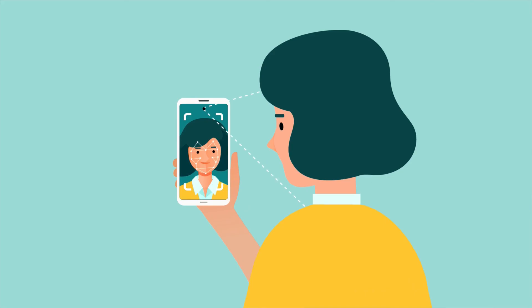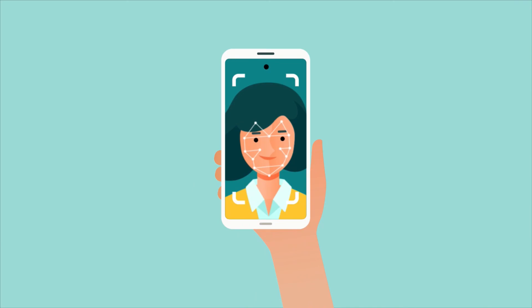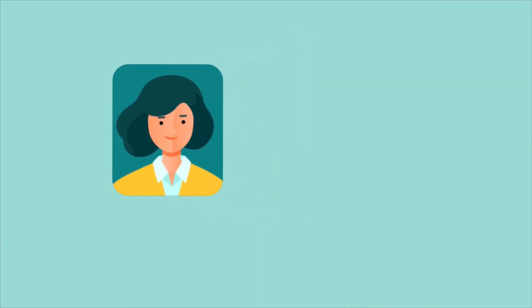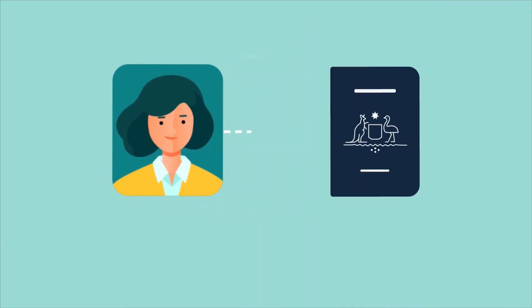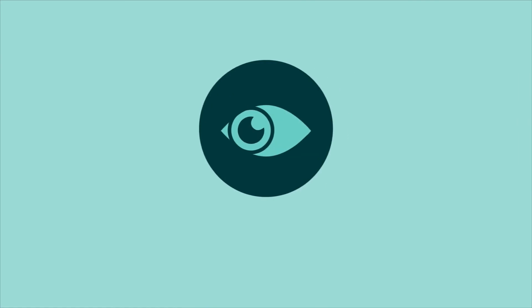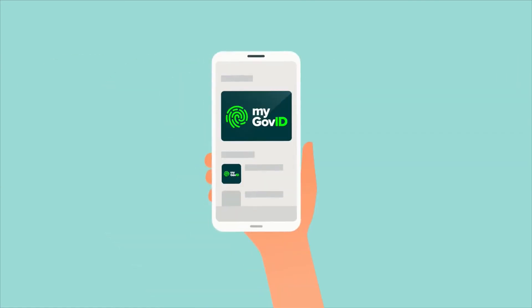The app scans your face to check that you're a real person and the right person. Face verification happens then and there and is only needed at the time you set up your MyGovID. The image captured during this process is checked against existing government records and the government claims that it's not used for surveillance, at least not yet.